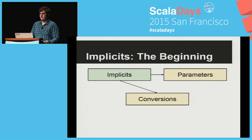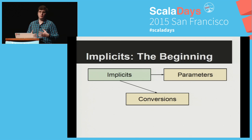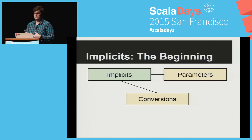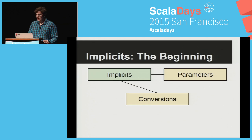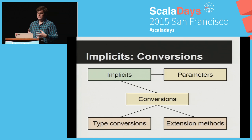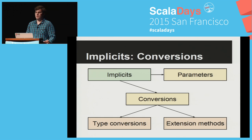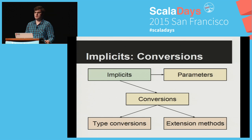Let's start to talk about implicits. You're all familiar with Scala and of course with implicits, so you know that implicit is divided into two big sections: parameters and conversions. Conversions are a bit simpler than parameters, so we'll start from them. They're also divided into two: type conversions and extension methods.